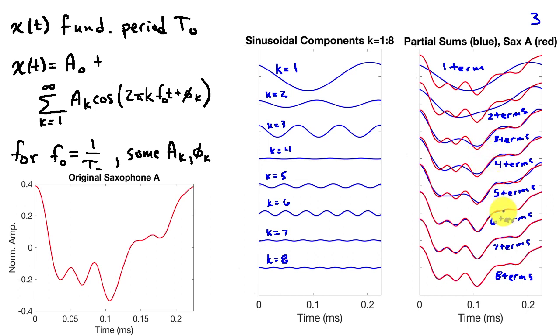And so on, as we add more and more terms, you'll notice that with respect to that particular drop at about 0.11 milliseconds, that the sixth term also makes a pretty big contribution. But by the time we get to eight terms, we've almost perfectly represented the original signal. There's some small errors yet, and if we added more terms, we would eliminate those errors as well.